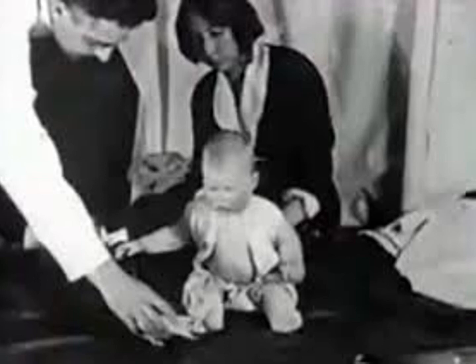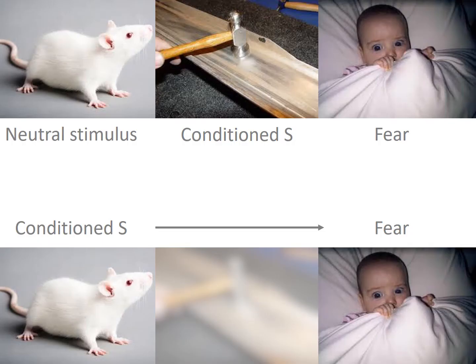The experimenters would present Little Albert with a white rat, and every time they presented the rat, they would hit an iron bar with a hammer, evoking a loud and unpleasant sound. In response to this sound, Albert would cry, manifesting fear.